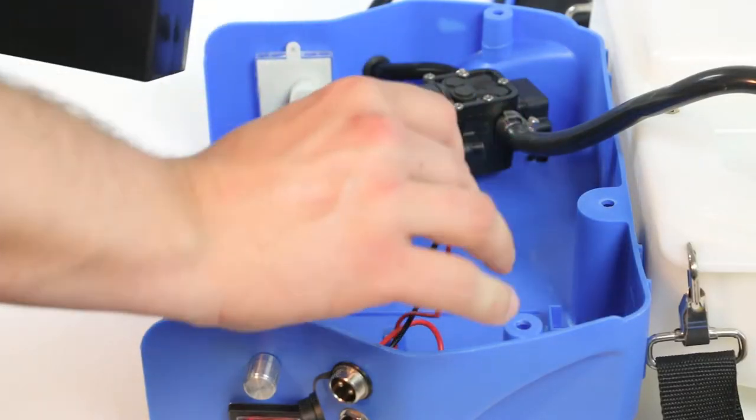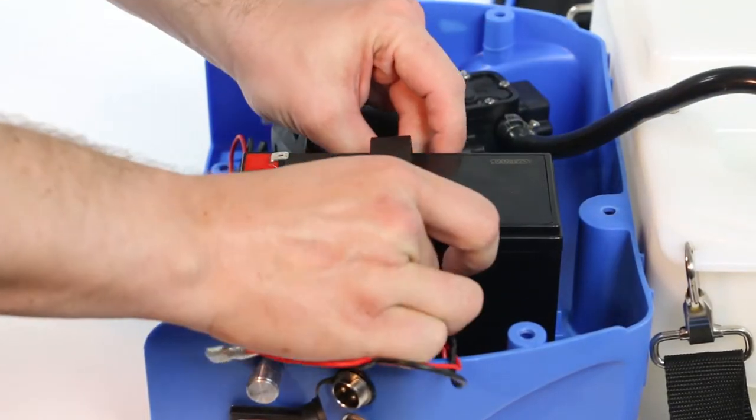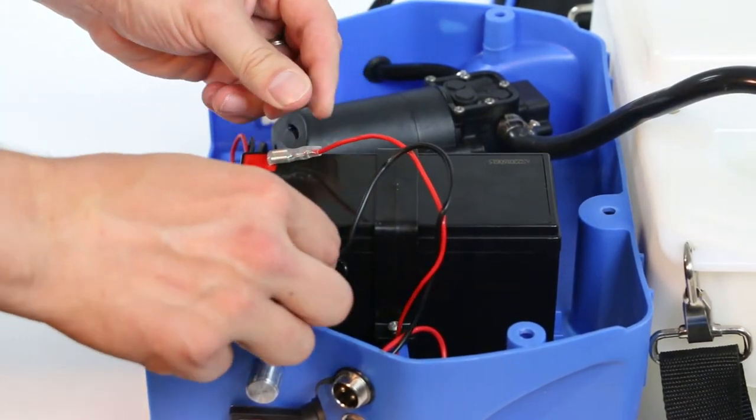From here, simply insert the replacement battery and follow the previous steps in reverse to reassemble, making sure to connect the correct connectors. Positive to positive and negative to negative.